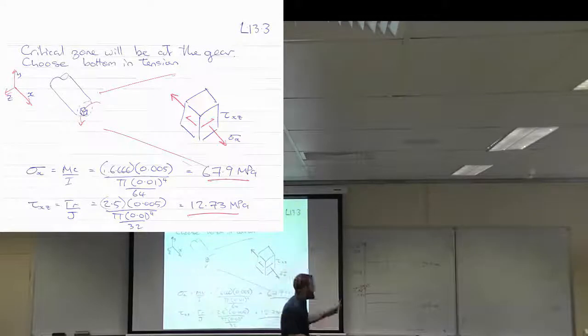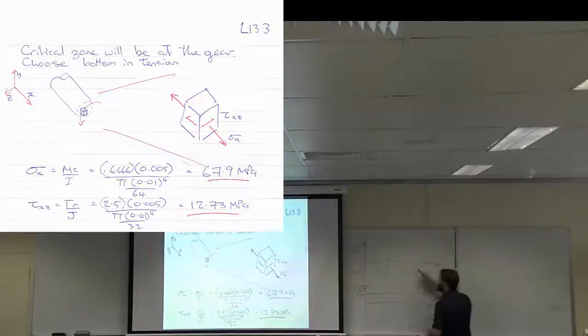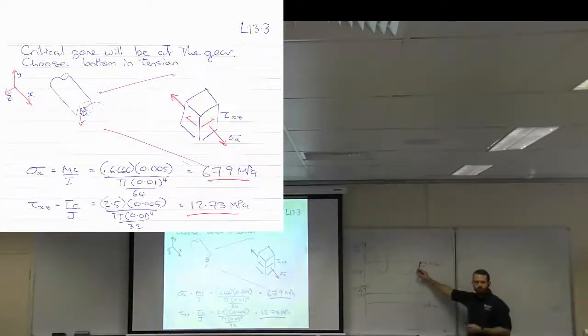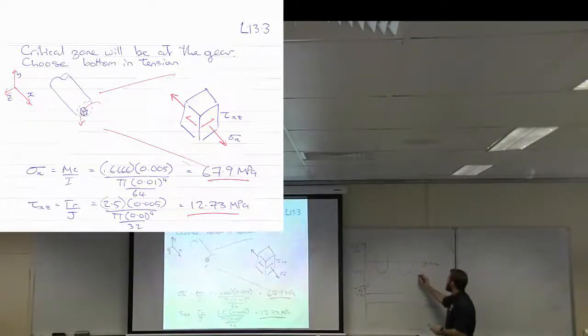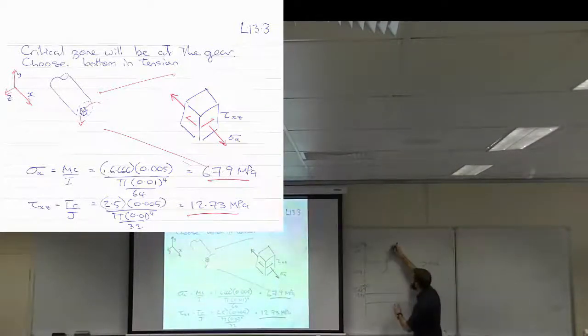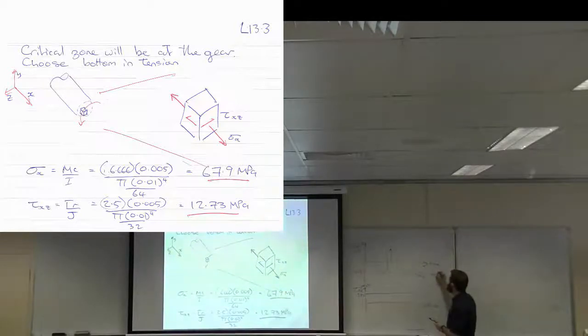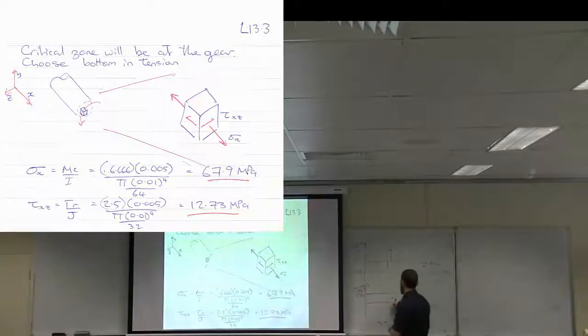So can you get an alternating and a mean value of this stress? Yes. So sigma x alternating is equal to what? Amplitude. Is equal to? So that one's the 67, yeah. So that's just this distance. So that's 67.9 megapascals. And what does sigma x mean equal to? Zero megapascals.